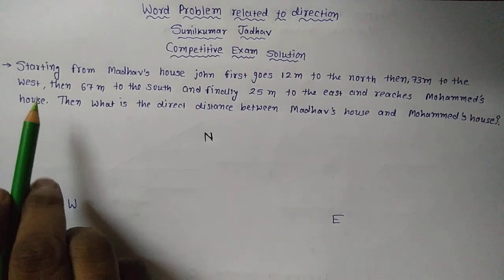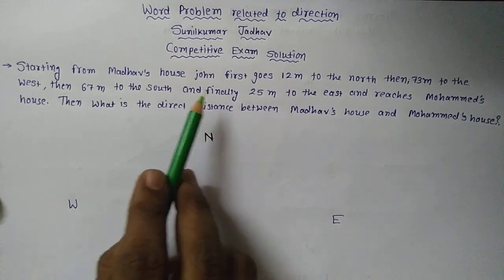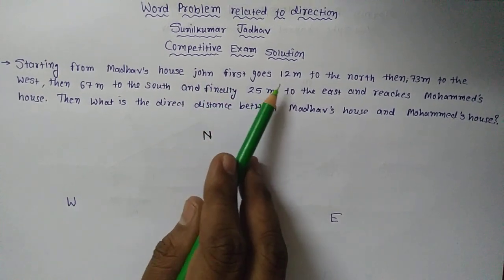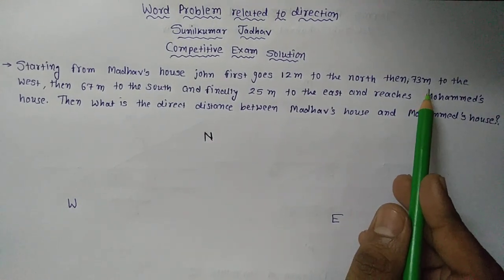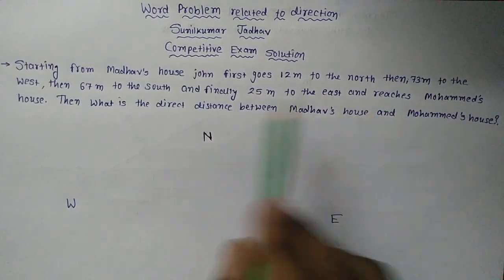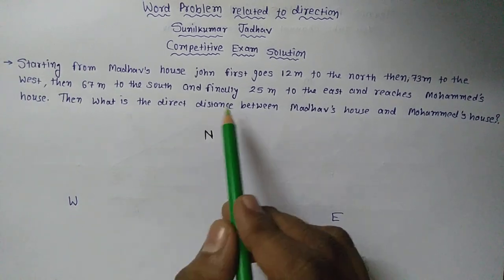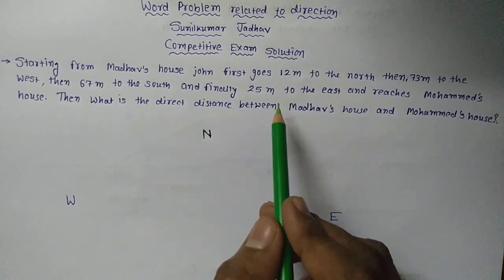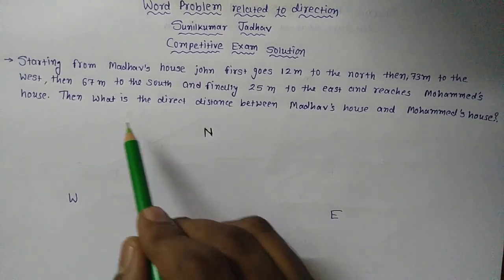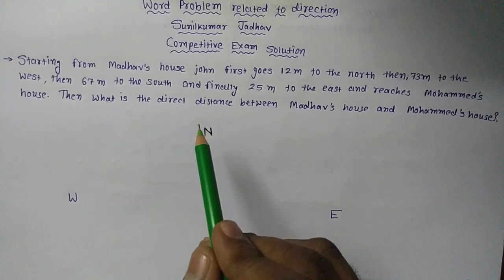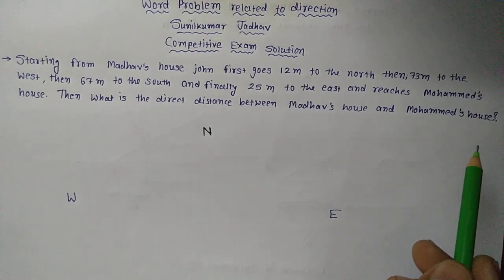Let us see the question first. Starting from Madhav's house, John first goes 12m to the north, then 73m to the west, then 67m to the south, and finally 25m to the east and reaches Mohammed's house. Then what is the direct distance between Madhav's house and Mohammed's house?